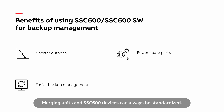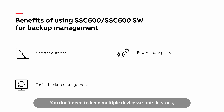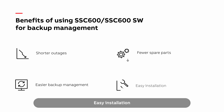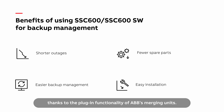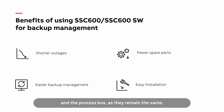Fewer spare parts — merging units and SSC600 devices can always be standardized. This means you can optimize your spare parts management. You don't need to keep multiple device variants in stock which all would need to be managed with various tools. Easy installation — replacements and installation are easy thanks to the plug-in functionality of ABB's merging units. There is also no need to change the electrical wiring and the process bus, as they remain the same.